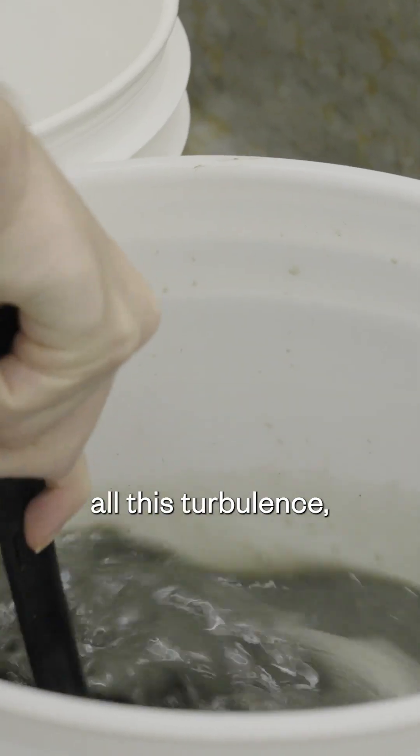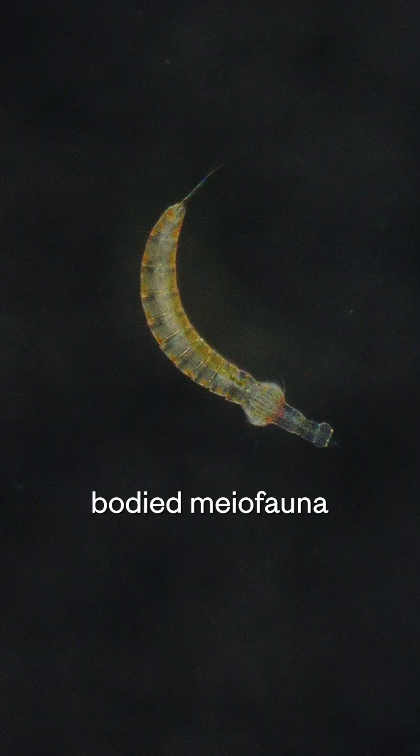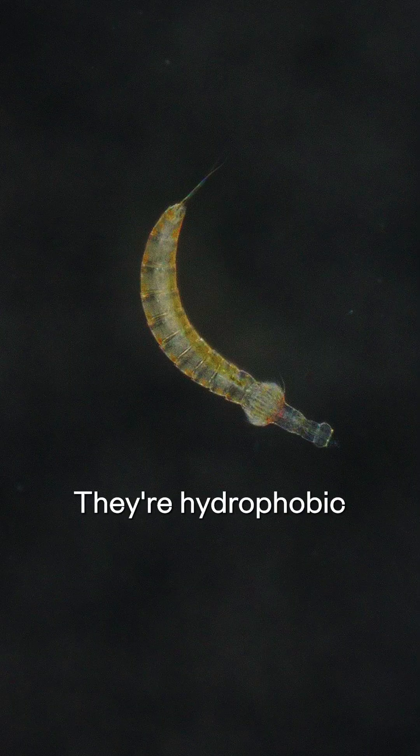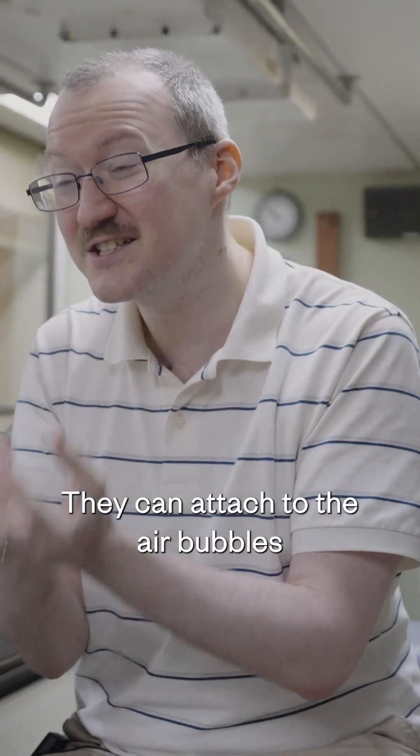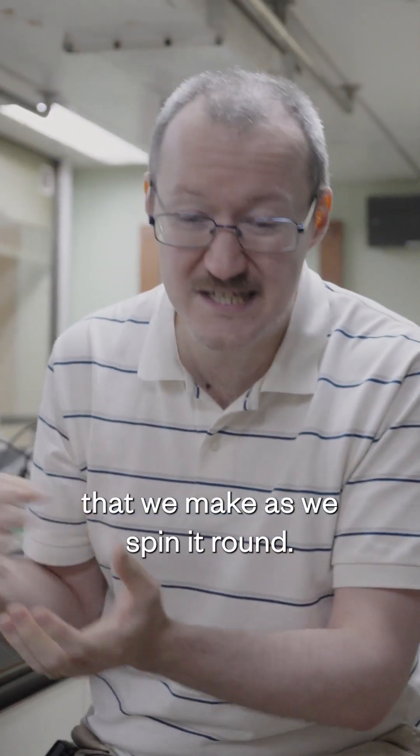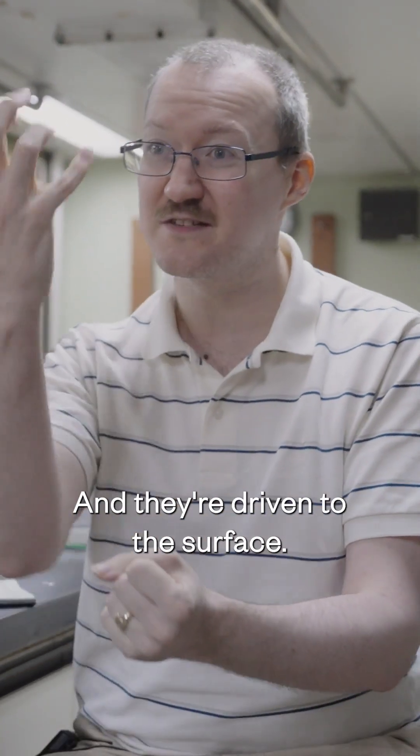As we cause all this turbulence, the cuticles of the hard-bodied meiofauna are hydrophobic. They actually don't like water very much. They can attach to the air bubbles that we make as we spin it round, and they're driven to the surface.